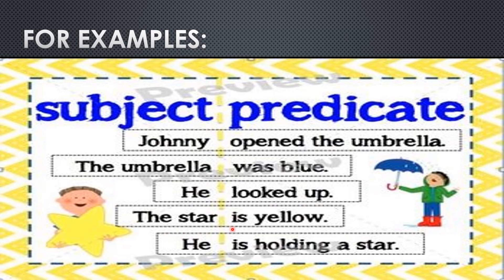The star is yellow. What is yellow? The star — it is the subject. And how is it? The predicate is yellow. He is holding a star. He is the subject; is holding a star is the predicate.